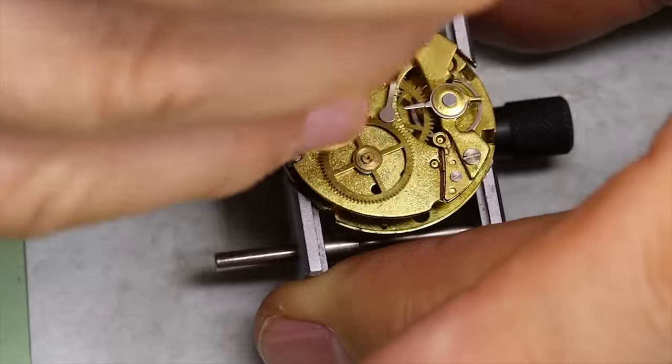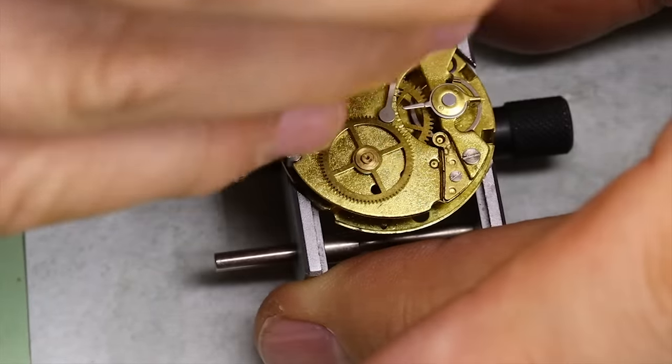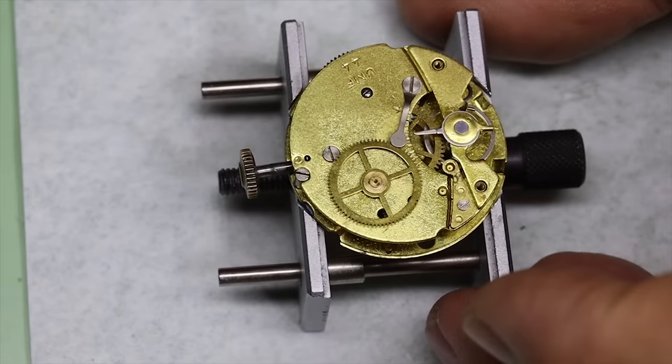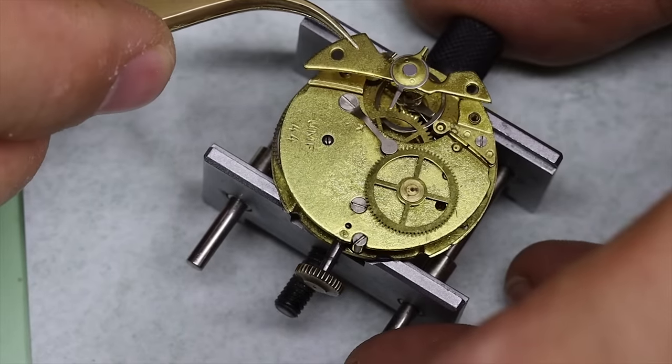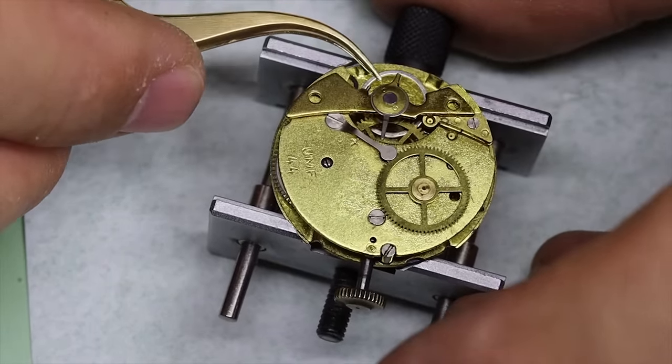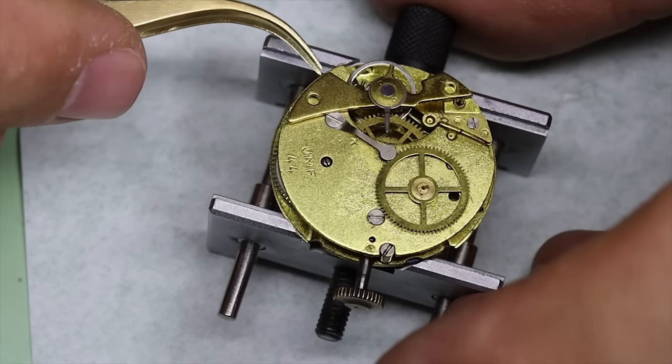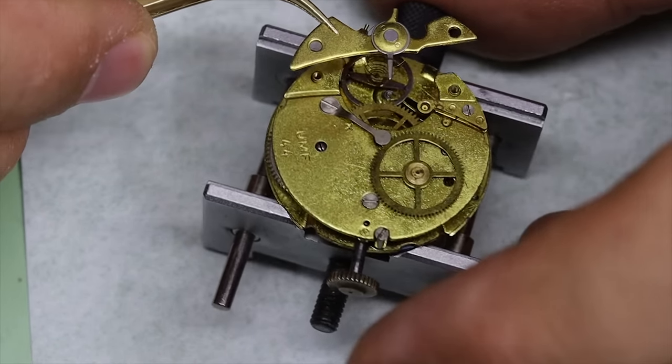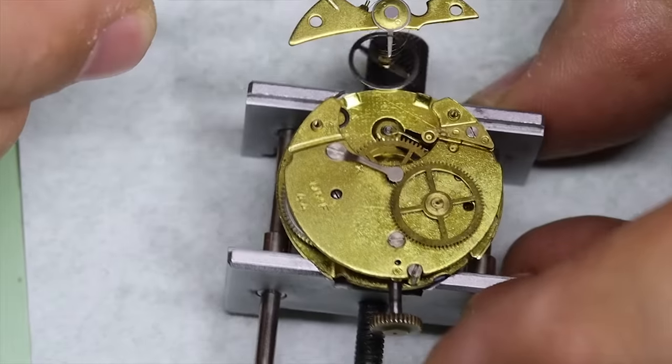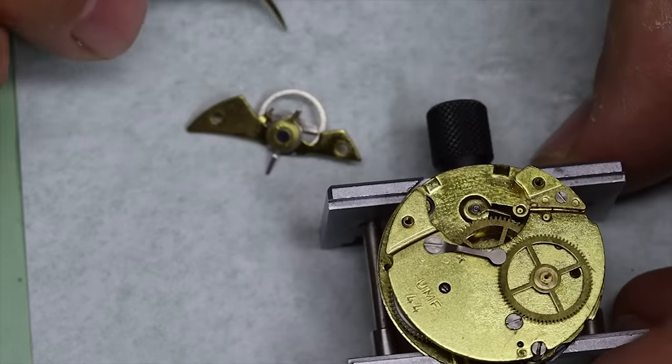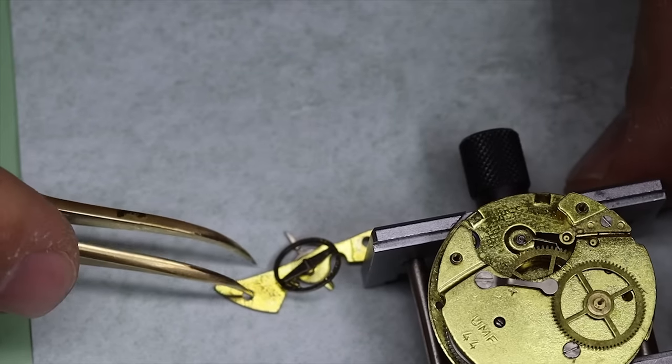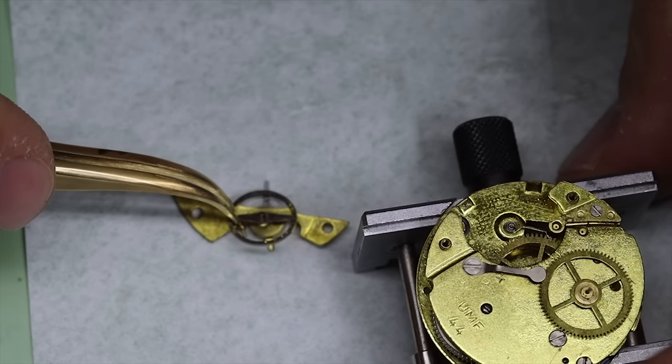This brand, UMF Ruhla, was an East German brand. And actually this brand has a pretty interesting story by itself. It was at one point probably the biggest manufacturer of watches in the whole world, because of course they produced for the East German and some other Soviet bloc countries during the Cold War. So they were actually in operation until 1990. But that was of course the year when the whole Soviet bloc fell and the planned economy with it.